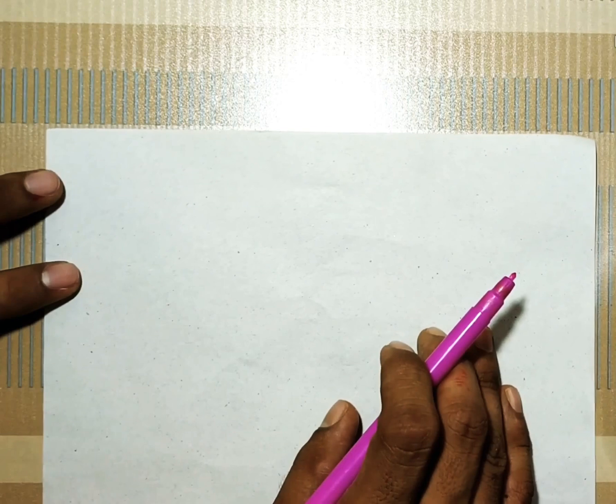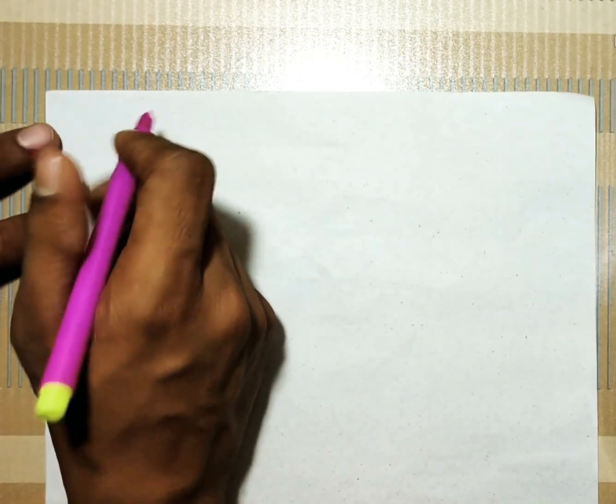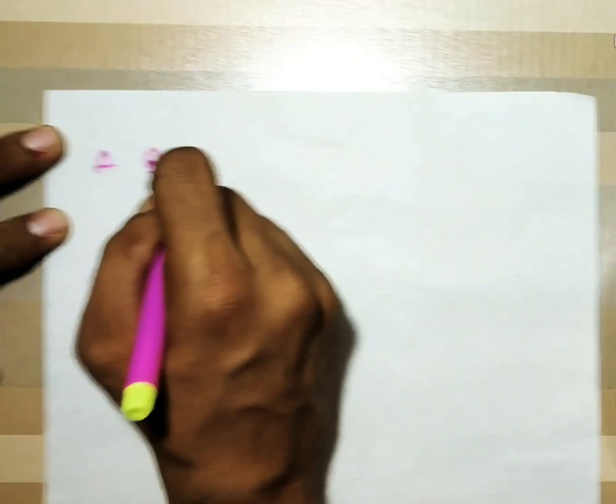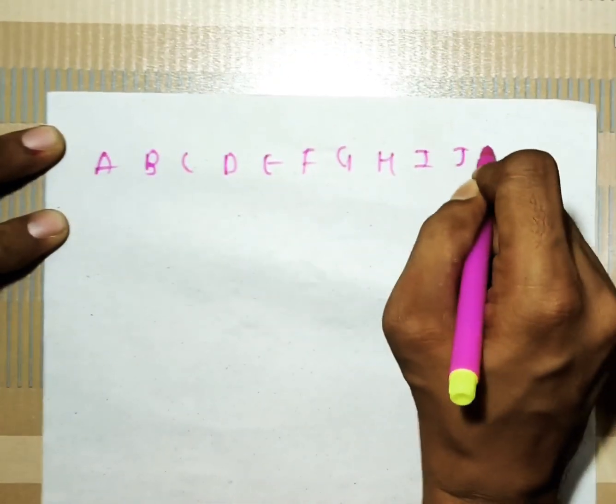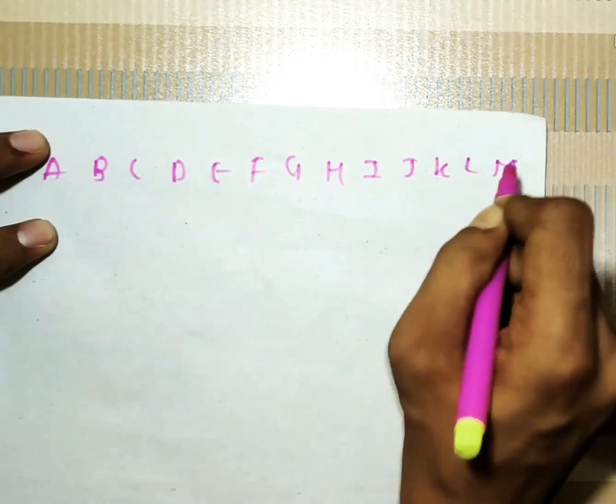First what we have to do in this kind of question is we have to put down all the letters. A, B, C, D, E, F, G, H, I, J, K, L, M.